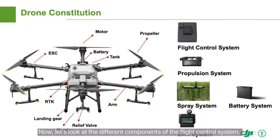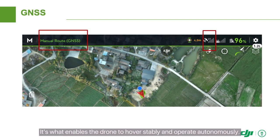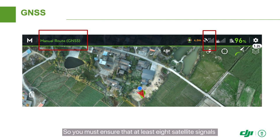Now, let's look at the different components of the flight control system. First, satellite positioning, or GNSS. It's what enables the drone to hover stably and operate autonomously. You must ensure that at least eight satellite signals can be received before each flight.